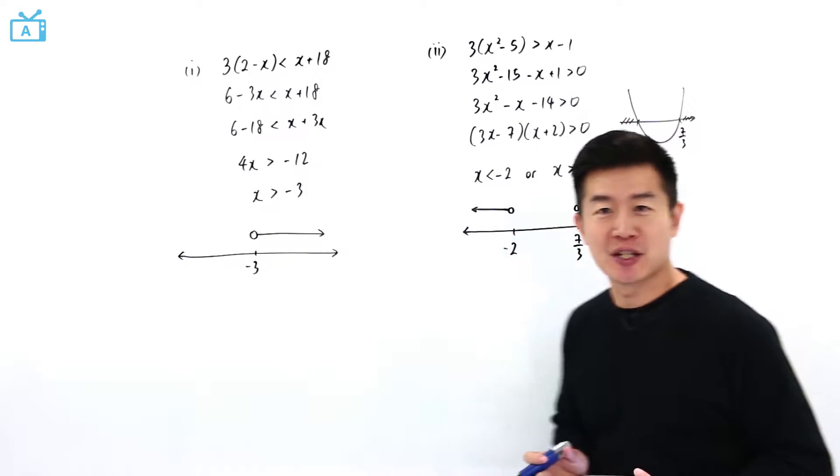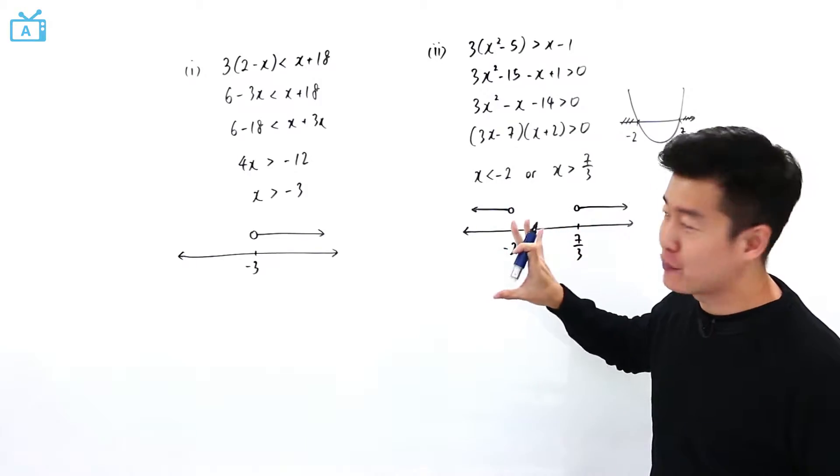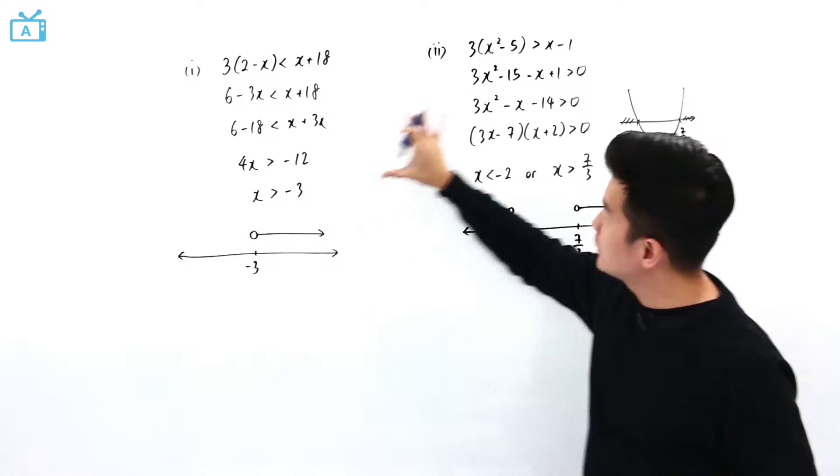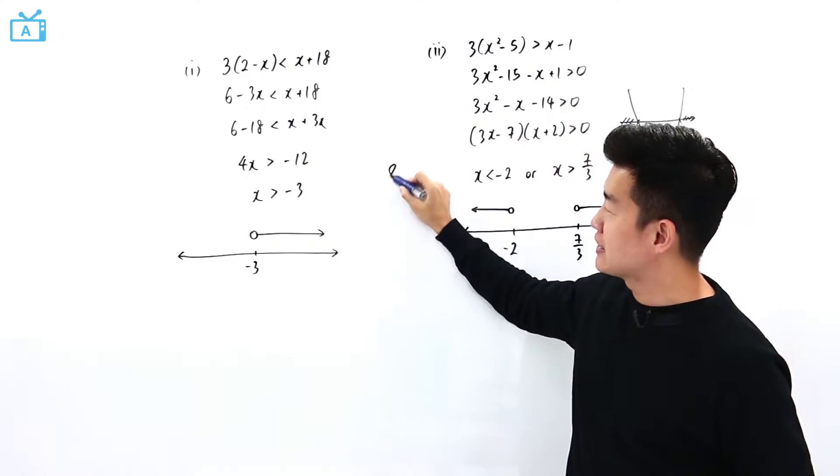In this last part of the question, what we are supposed to do is to find a set of values of x that satisfy both this inequality and this inequality at the same time.